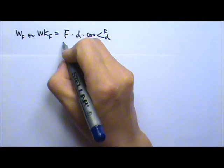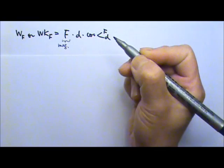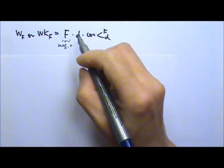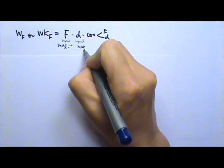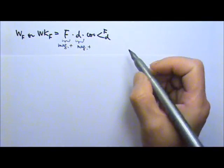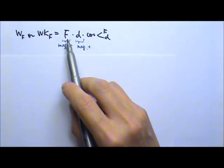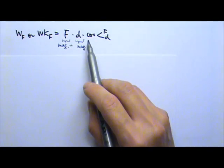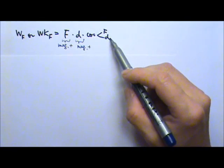This force is the magnitude of the force, which means it is a positive number. The displacement is also the magnitude of the displacement, so it's also a positive number. So basically the work done by a force is the magnitude of the force times the magnitude of the displacement times cosine of the angle between these two vectors.